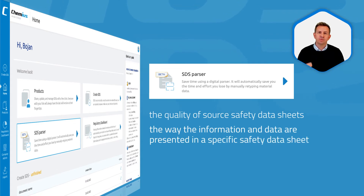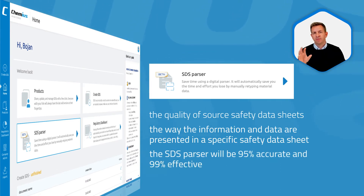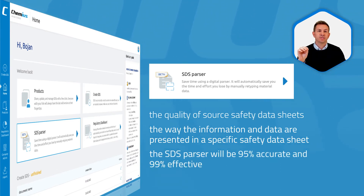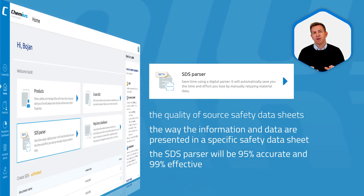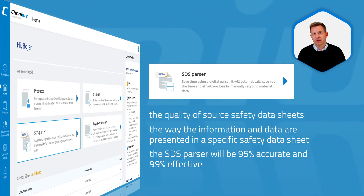For example, if you have computer-readable safety data sheets, the safety data sheet parser will be 95% accurate and 99% effective. However, if you have safety data sheets that are not computer-readable, then you cannot expect good results.